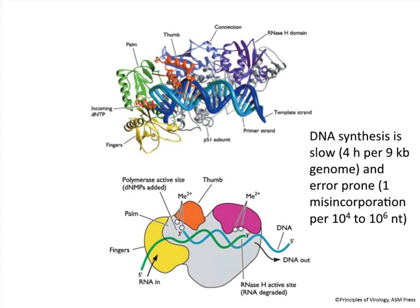Reverse transcriptase is a very slow enzyme. It takes about four hours to make one single-strand copy of the viral genome. It also makes a lot of mistakes — an error every 10,000 to up to one million base pairs. So it's a slow and mistake-prone enzyme, not unlike other RNA polymerases.